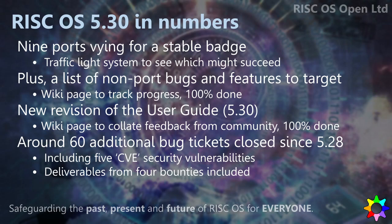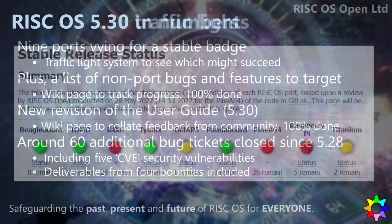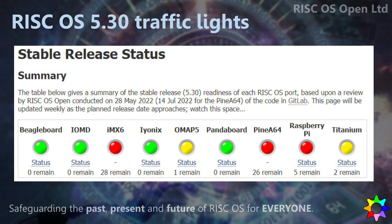We have completed all of the work on updating the user guide. There have been loads of other things that have happened since 5.28 that are part of RISC OS 5.30. However, if you look at the traffic light system, you can see that there are various platforms that aren't green yet. Some of them have even just one middling issue that needs to be resolved. And these are not RISC OS Open development tasks — these are tasks for the people that maintain those platforms. We don't feel comfortable calling it a stable release while these issues are still outstanding.